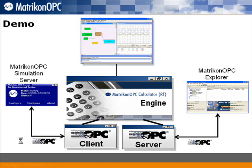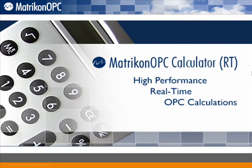In summary, we created a basic calculation in the design environment and downloaded the schematic into the real-time engine. The real-time engine connected to the external OPC server, made the calculations, and presented the results into the OPC server. The external client — the Matricon OPC Explorer — connected to the calculations OPC server and viewed the results. Thank you for taking the time to view this short tutorial. Hopefully you can see how easy it is to create calculations with the Matricon OPC Calculator RT.